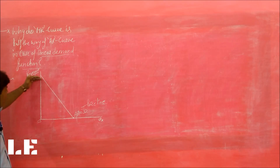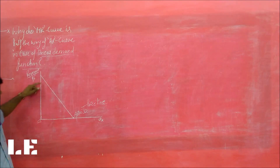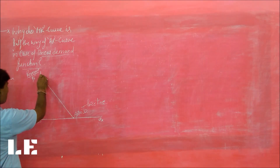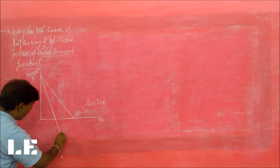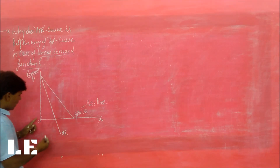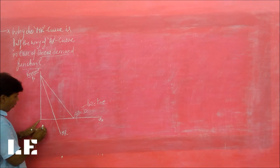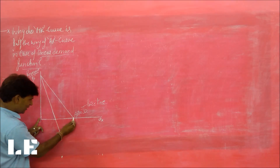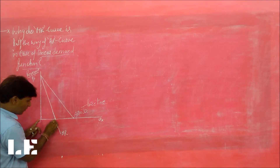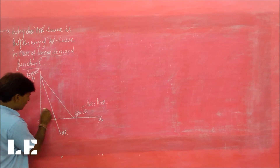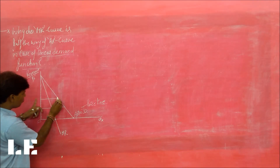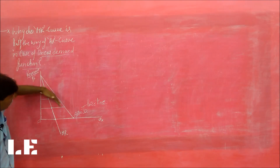So when we make the corresponding MR curve, technically the MR curve is half the way. MR curve half the way means: if I see the horizontal distance from the vertical origin point to the point where MR curve intersects the horizontal axis — this distance is half the way compared to the corresponding distance for the AR curve. The MR curve is half the way.